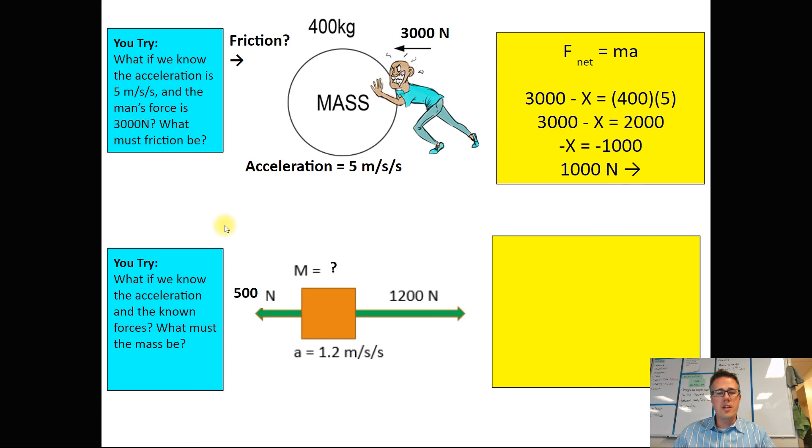If you're still watching, you're ready to check your answer. Like always, we're going to start with our equation. Net force equals mass times acceleration. Our net force is going to be the 1200 minus the 500. We don't know our mass, and it's going to be times the acceleration.